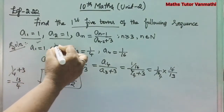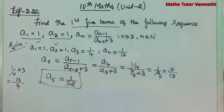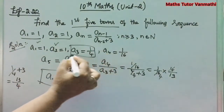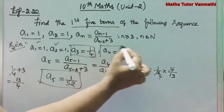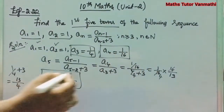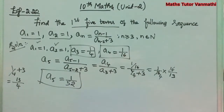So a_1 and a_2 were given. We have found a_3 = 1/4, a_4 = 1/16, and a_5 = 1/52. Next we can see the exercise problems.